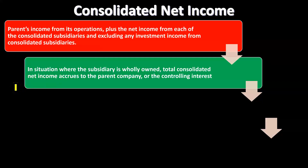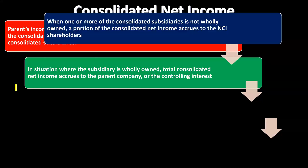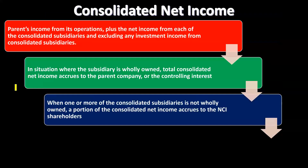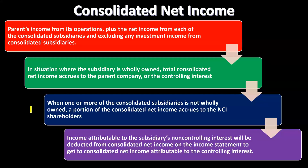In situations where the subsidiary is wholly owned, total consolidated net income accrues entirely to the parent company or the controlling interest. When one or more of the consolidated subsidiaries is not wholly owned, a portion of the consolidated net income accrues to non-controlling interest shareholders. That's when we have the more complicated situation where we show the non-controlling interest on the income statement.